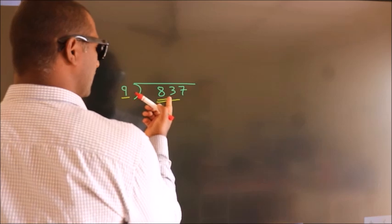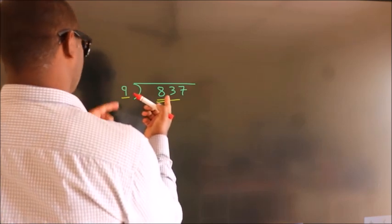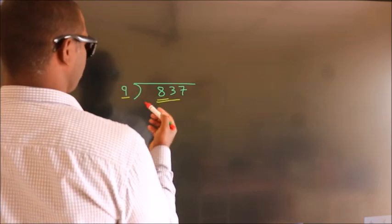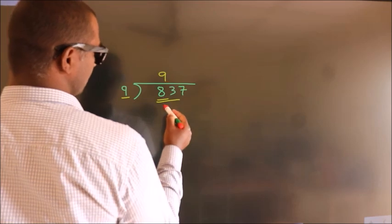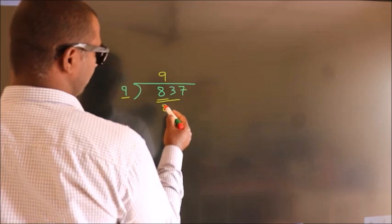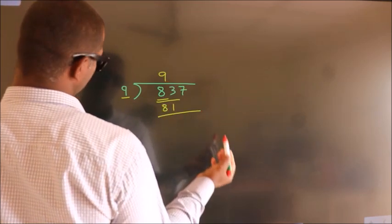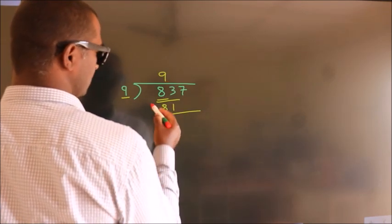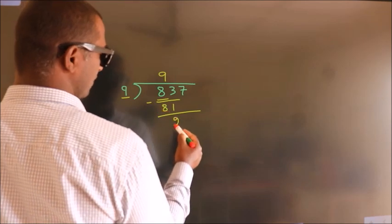A number close to 83 in the 9 times table is 9 nines are 81. Now we subtract, and we get 2.